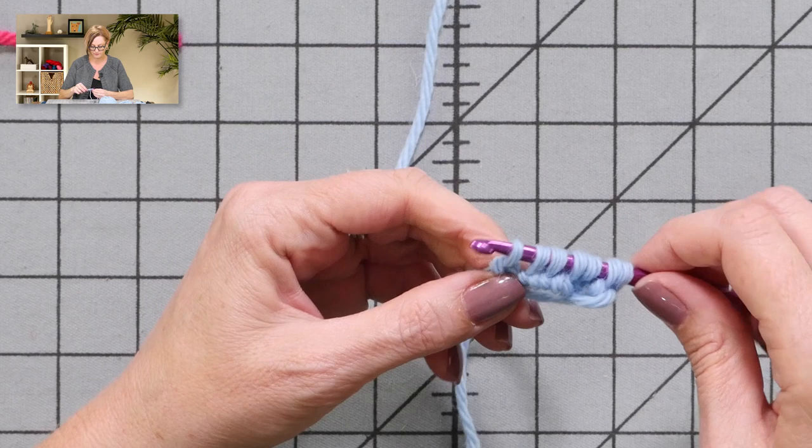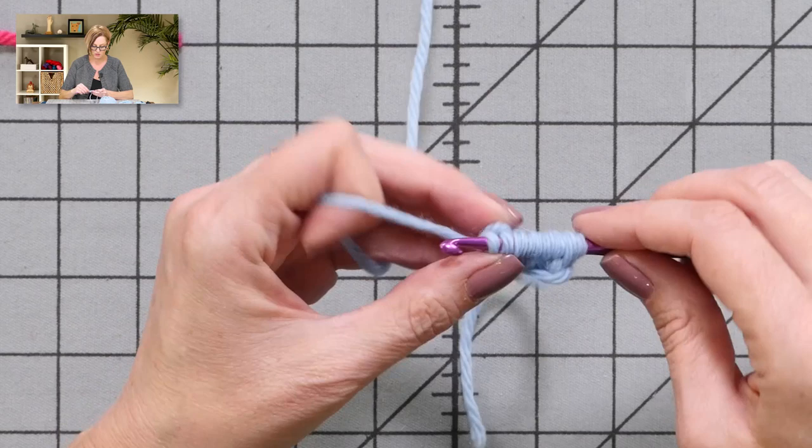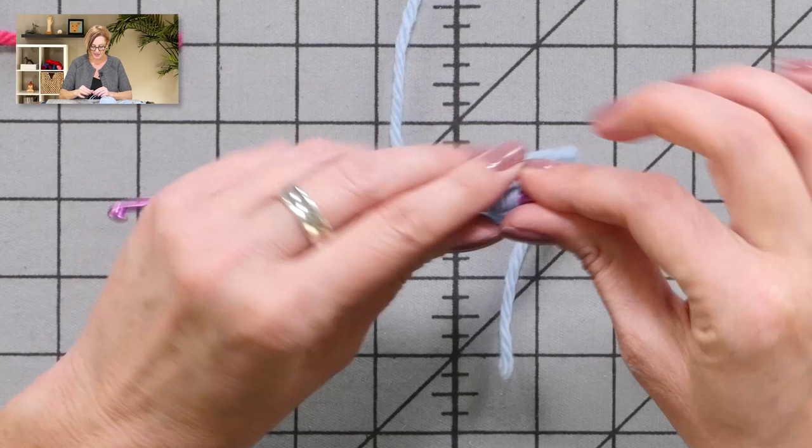Two, four, six, seven, eight. Okay, then you want to slide those stitches down to the other end of the crochet hook.